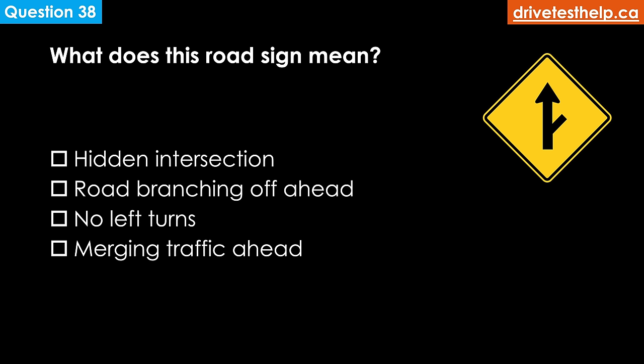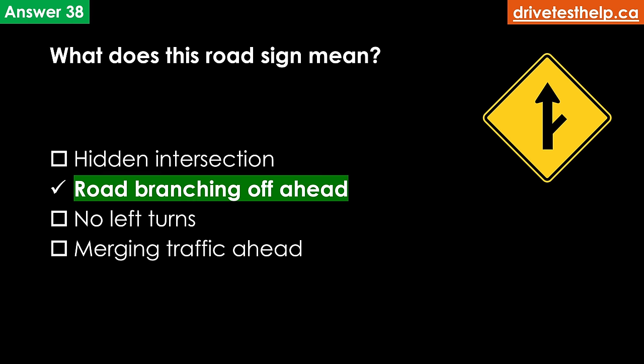What does this road sign mean? Options: hidden intersection; road branching off ahead; no left turns; merging traffic ahead. The correct answer is road branching off ahead. This sign indicates a side road branching off to the right.